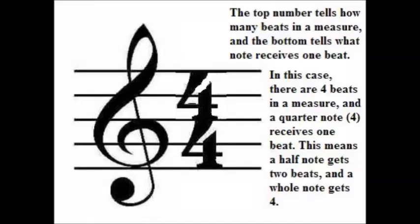Time signatures contain two numbers. The top number indicates the number of beats in each measure. The bottom number indicates what type of note gets a beat.